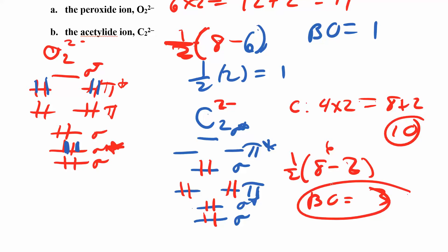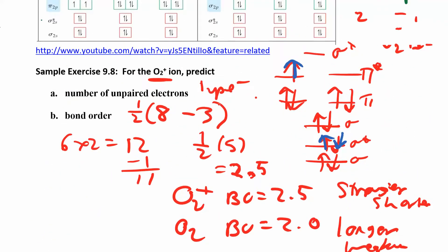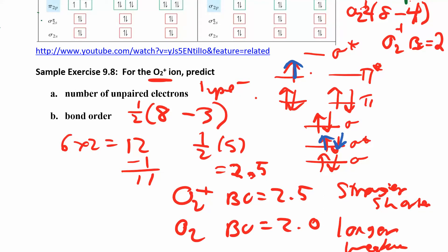This one is also diamagnetic because there are no unpaired electrons. If you compare magnetism, O2 plus was paramagnetic because it has one unpaired electron. There are a couple homework problems like this—you should be able to answer these kinds of questions.